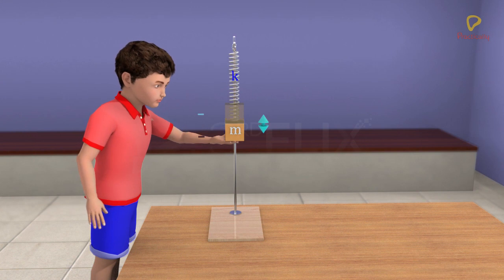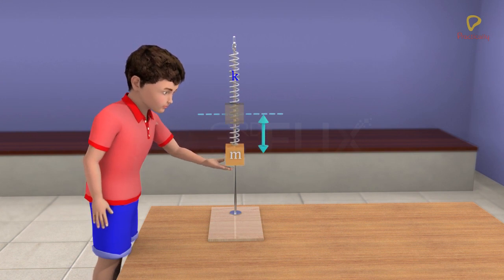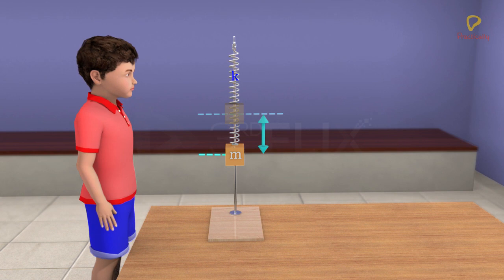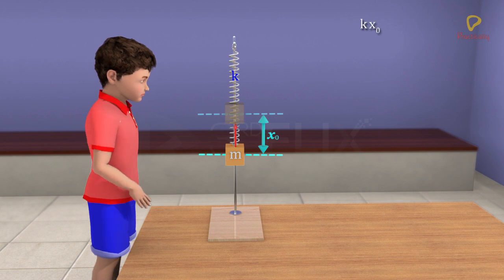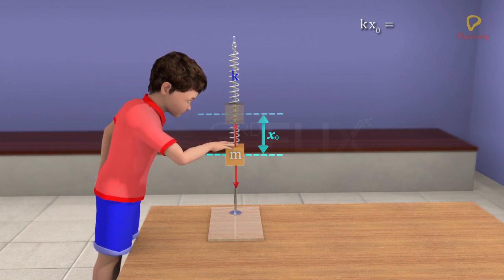Let the block be released slowly till it reaches equilibrium. The spring force kx0 is balanced by the weight of the block mg.